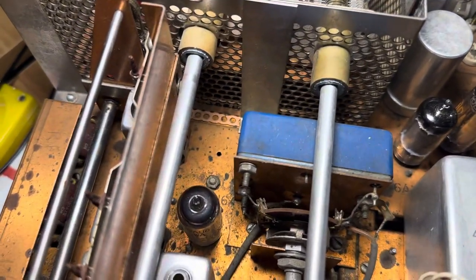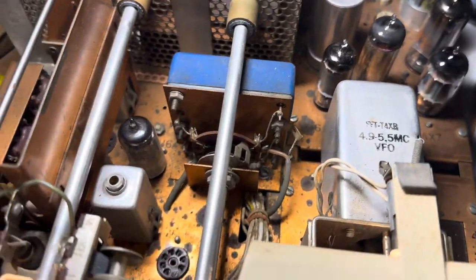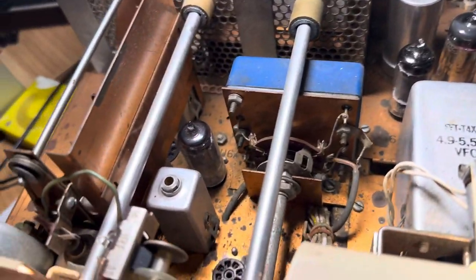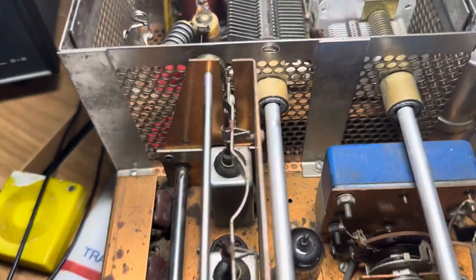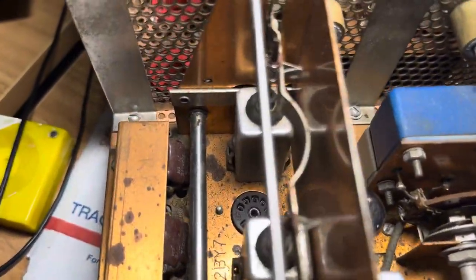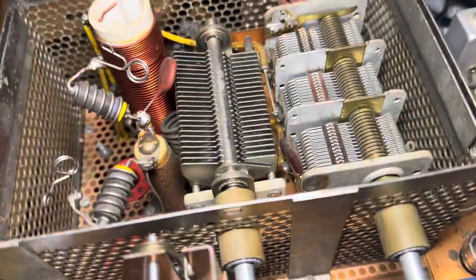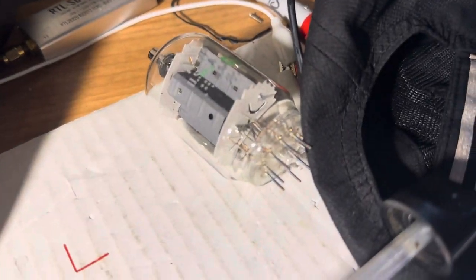I had to put in two 6AU6s. Is that one even lit up? I don't know, maybe. And then I need a 12BY7. That's coming in the mail. And I need two finals. I have one final here that I got in the mail.